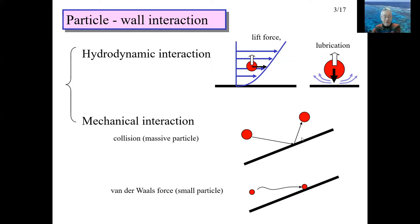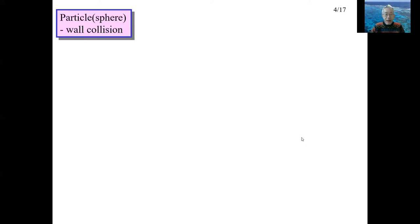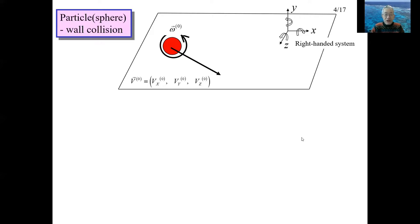In the case of a flying particle, the particle will adhere to the wall, and the coefficient of restitution is zero. Let's derive the relation between the pre- and post-collision velocities. Consider three-dimensional motion of a spherical particle in collision. Both translational velocity v and angular velocity omega have three components: x, y, and z. The superscript zero is attached to pre-collision symbols, and superscript two to post-collision symbols.